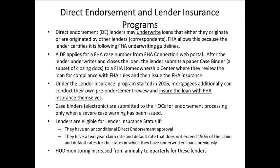A newer program started in 2006, the Lender Insurance Program, allows mortgagees to not only underwrite but also insure the loan themselves. Under this program, only a subset of case binders are submitted and in electronic form. Lenders become eligible for Lender Insurance status if they have an unconditional direct endorsement approval and a two-year claim and default rate not exceeding 150% of the rates for the states in which they've underwritten loans. HUD monitors these lenders quarterly rather than just annually.